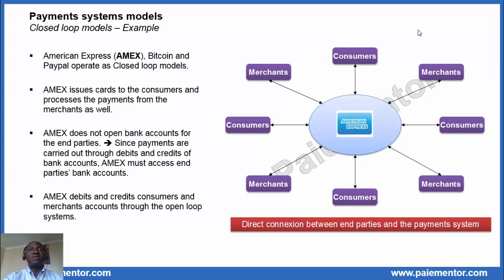The next question now is: how does Amex access the end parties' accounts? Simply by joining the open loop system to access clearing and settlement systems and all the banks connected to them. In the next slide, we will see how this can be done.